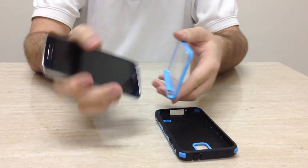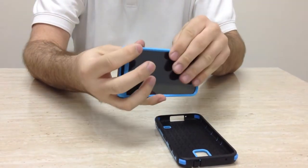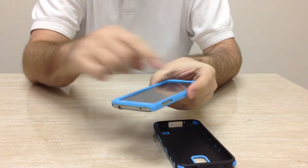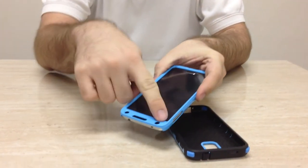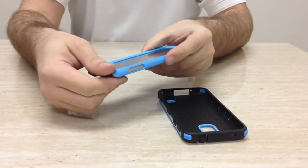Easy to get on. Just line things up and snap it into that front-facing case. As you can see, full-screen protection. Still have access to all the light sensors, ports, indicators, all of that.